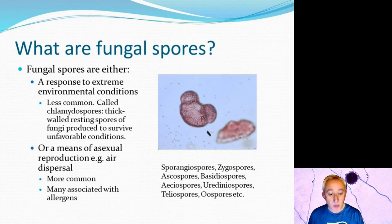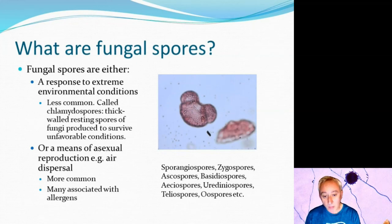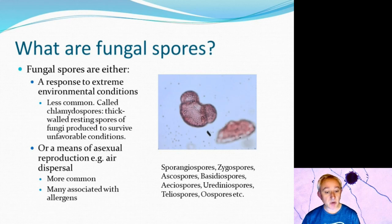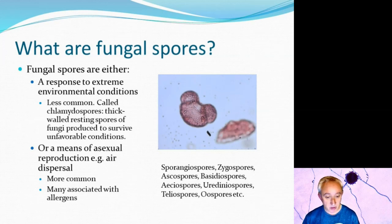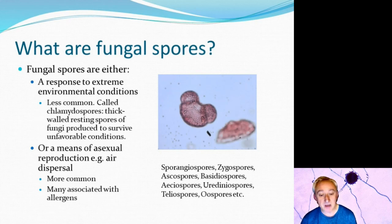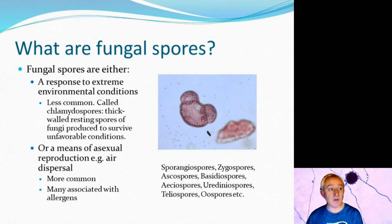With fungal spores there are some key differences to bacterial spores. Fungal spores are microscopic, active biological particles, and fungi can produce spores for two reasons. First, they allow the fungus to reproduce — a similar purpose to seeds within the kingdom of plants, although the mechanisms of production and distribution are slightly different, and the names also vary depending on the type of fungus and its physiological state. There are also special spores called chlamydospores — thick-walled resting spores produced to enable the fungus to survive unfavorable conditions.